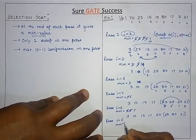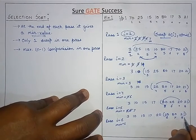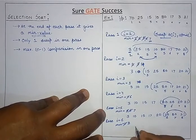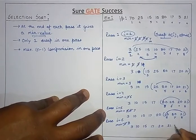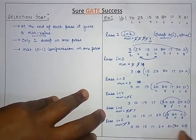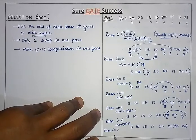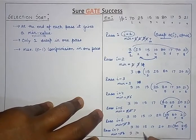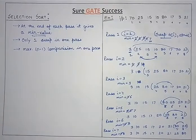At pass 6, i value is 6, minimum also starts from 6. Checking positions 6, 7, and 8: 25 is minimum initially, 80 is larger, but 21 is smaller than 25, so position 8 holds the minimum. We replace the 6th value with the 8th value. The array becomes: 3, 10, 15, 17, 20, 21, 80, 25. In pass 7, i is 7 and we check position 8 — it is smaller, so we swap. The final sorted array is produced.